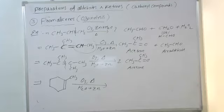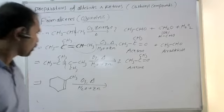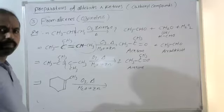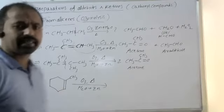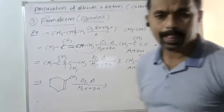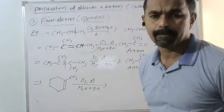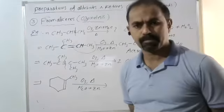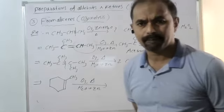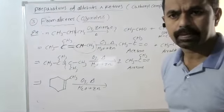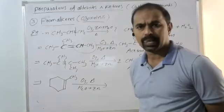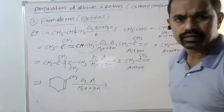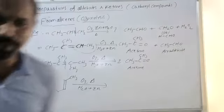Now, in this ozonolysis process — try this question: if methylcyclohexene is given, what is the product of ozonolysis? The IUPAC name of the product is asked. This type of question has been given many times before.